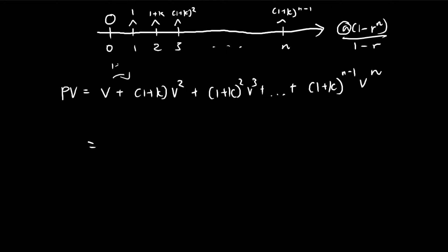you multiply each term by (1+k) times v. If you take this term and multiply it by (1+k) times v, you get this term. Each term is multiplied successively by this factor, so this is the r, the common ratio.